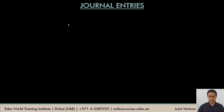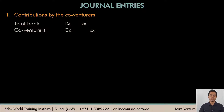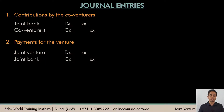For journal entries under this method: when co-venturers contribute money or resources, the joint bank account is debited and the co-venturers account is credited. When costs are incurred — whether revenue or capital expenditure such as buying machinery or equipment — the joint venture account is debited and the joint bank account is credited, representing the outflow of money towards those costs.